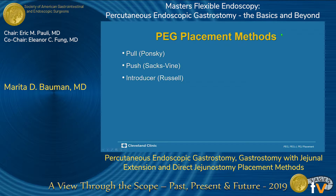There are other methods for PEG placement, but the three main ones I'm going to talk about today are the pull, the push, and the introducer method. Keep in mind, these are also applicable for the PEG-J and the direct percutaneous jejunostomy methods as well.